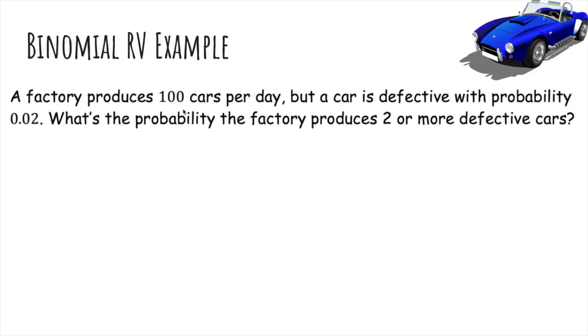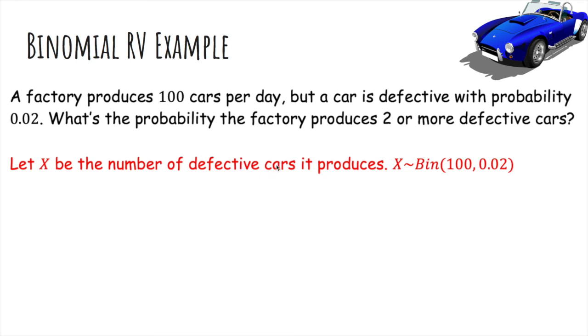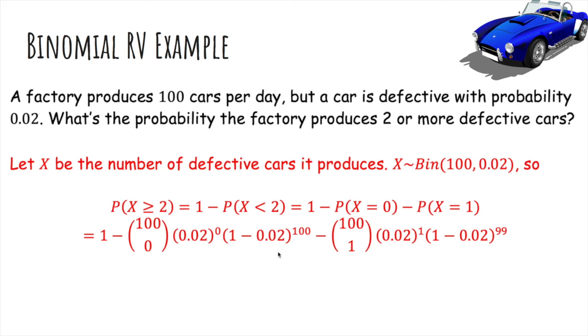Now let's do an example. A factory produces 100 cars per day, but a car is defective with probability 0.02. What's the probability that the factory produces two or more defective cars? If X is the number of defective cars we produce, then X is binomial 100 and 0.02, because there's 100 cars we produce, each one is defective with that probability. We want the probability X is at least 2. We can do 1 minus the probability is less than 2, and there's only two ways. It's either 0 or 1. Then we plug into the probability that is 0, the probability is 1 with the probability mass function, and you get 0.5967.